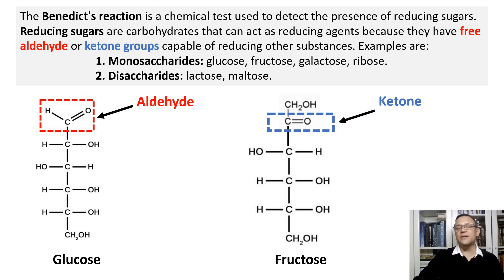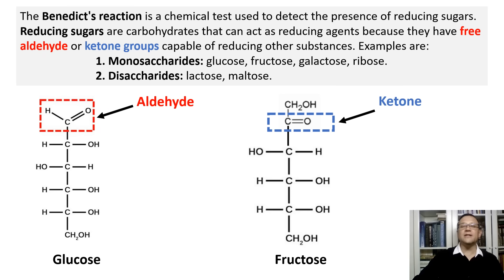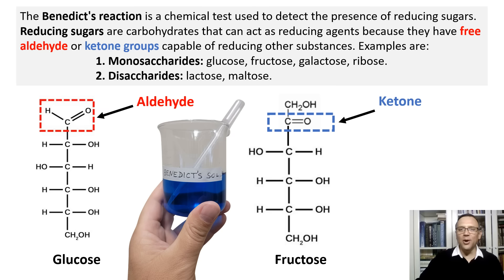Many of the foods we eat contain these reducing sugars. But how can we detect them? How can we identify the presence of reducing sugars in our foods? Since they are reducing sugars, they can reduce certain chemicals. In chemistry, to be reduced means to gain electrons or to decrease the oxidation state of an element or compound. There is a chemical that can be reduced by these sugars, resulting in a visible color change. That chemical is known as Benedict's reagent or Benedict's solution. When we add Benedict's solution to reducing sugars and heat the mixture, a chemical reaction occurs, leading to a color change that indicates the presence of reducing sugars.